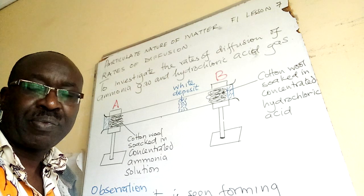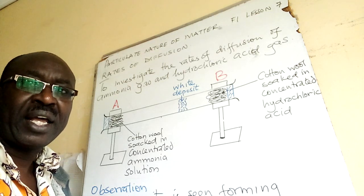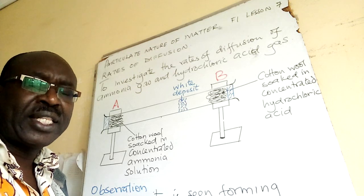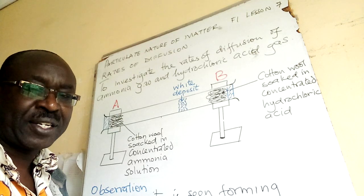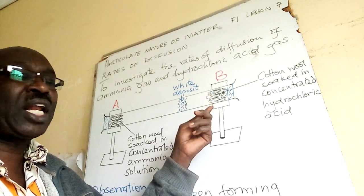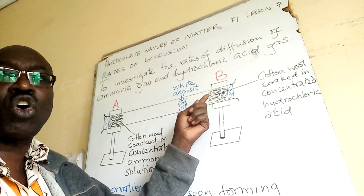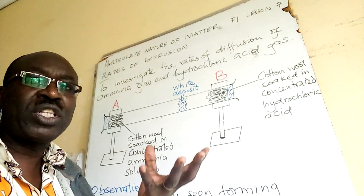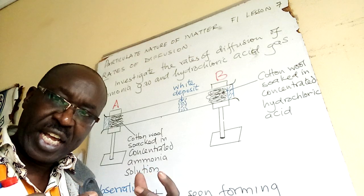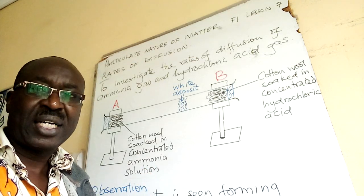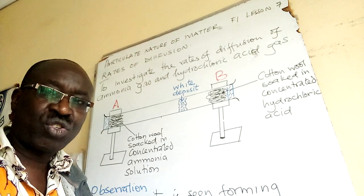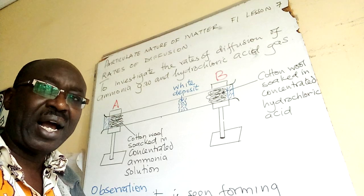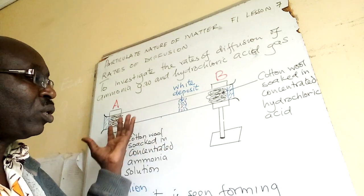The setup is as shown on the board. We shall call side A the side with concentrated ammonia solution — it is that solution that will give us ammonia gas. On side B, we shall have cotton wool soaked in concentrated hydrochloric acid, and on side A, the cotton wool is soaked in ammonia solution.